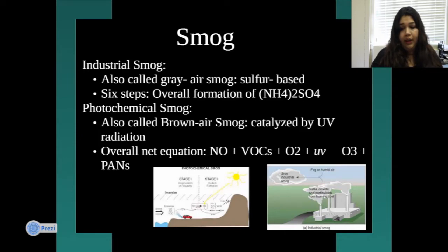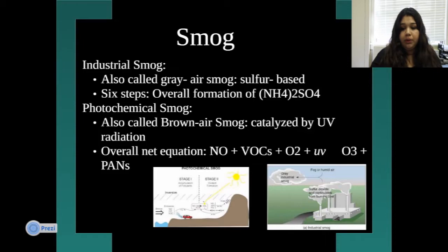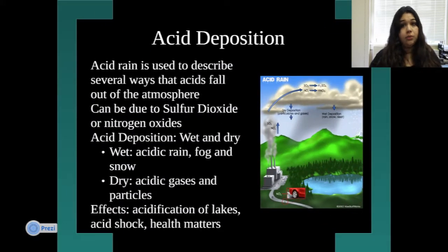Photochemical smog is also called brown air smog. It is catalyzed by UV radiation. The overall equation for photochemical smog is: NO + VOCs + O2 + UV light → O3 + PAN. Below are pictures of photochemical smog and industrial gray smog.